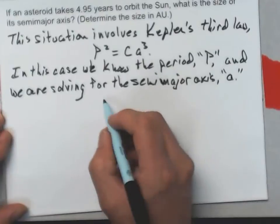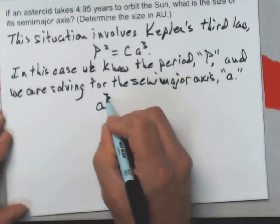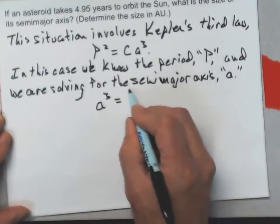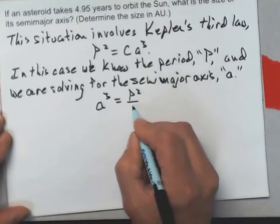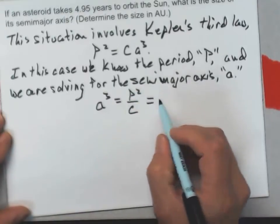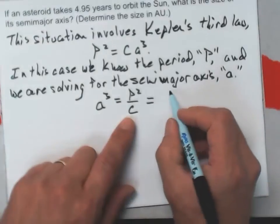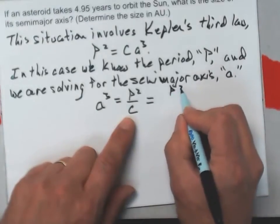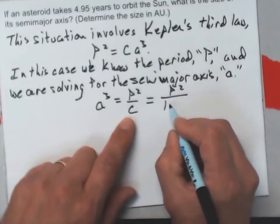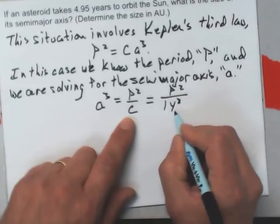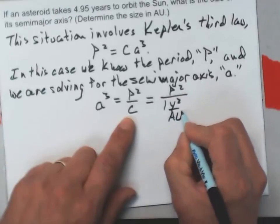I've got that A cubed is going to equal P squared over C, and here I would put in the value of C.